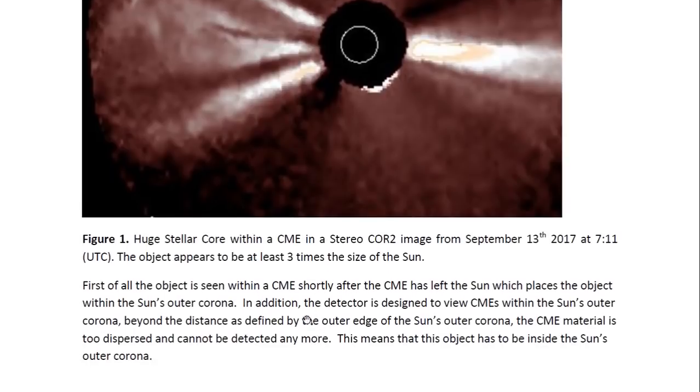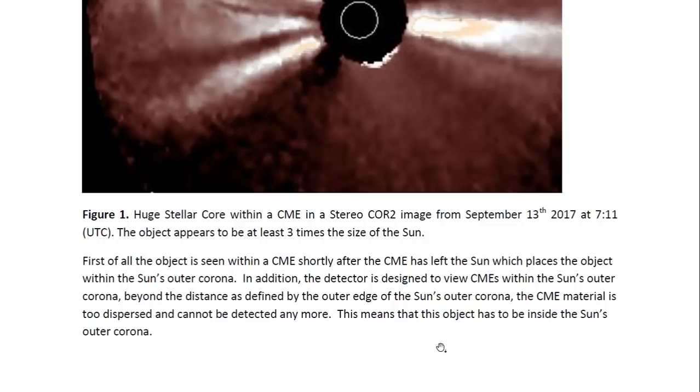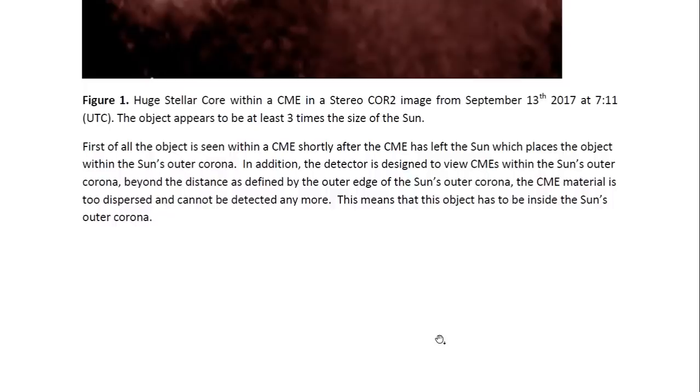So first of all, the object is seen within a CME shortly after the CME has left the Sun, which places the object within the Sun's outer corona. In addition, the detector is designed to view CMEs within the Sun's outer corona. Beyond the distance as defined by the outer edge of the Sun's outer corona, the CME material is too dispersed and cannot be detected anymore by this detector. This means that this object has to be inside the Sun's outer corona.